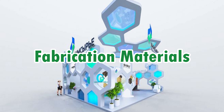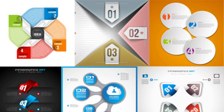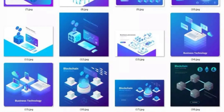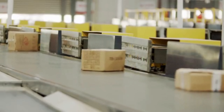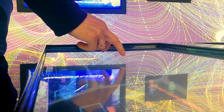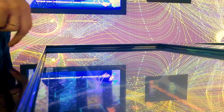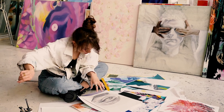Fabrication materials are an essential part of the exhibition fabrication process. The type and quality of material used will determine the success or failure of a display's design. There is a wide range of materials available for use in exhibit fabrication, including wood, metal, fabric, and glass. These materials, along with others like plastic wrap or acrylic resin, may be used in various configurations to achieve the desired results depending on the specifics of the project at hand.